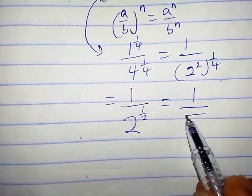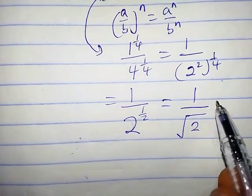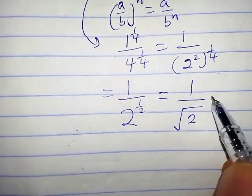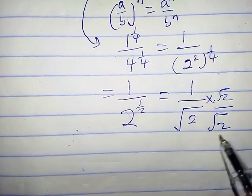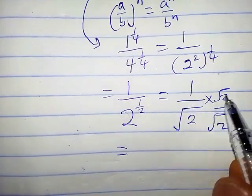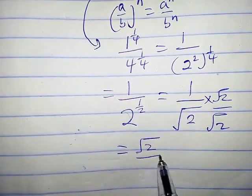Now let's rationalize this. We're going to have times root 2 over root 2. So this equals 1 times root 2, that is square root of 2, over square root of 2 times square root of 2, that is square root of 4.